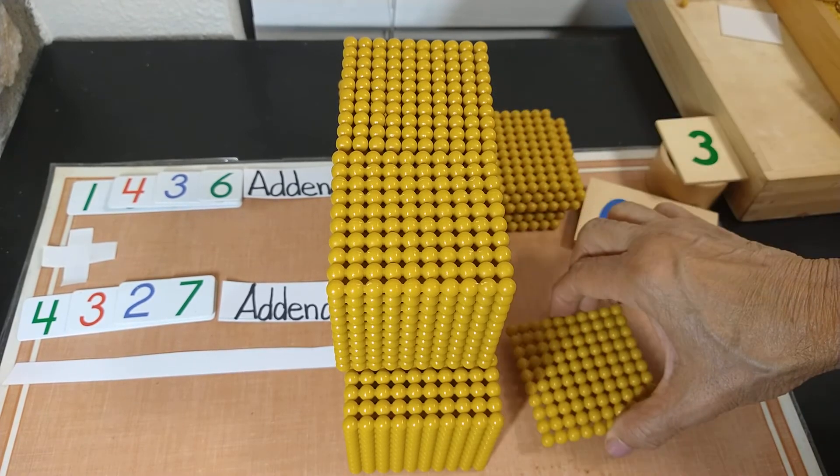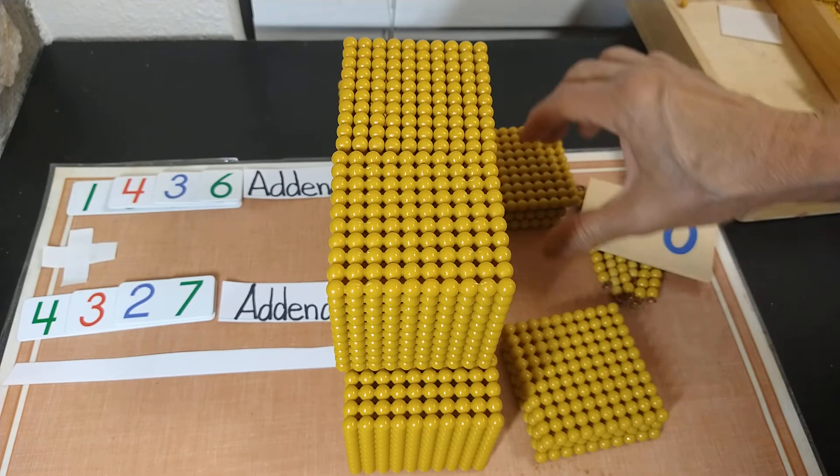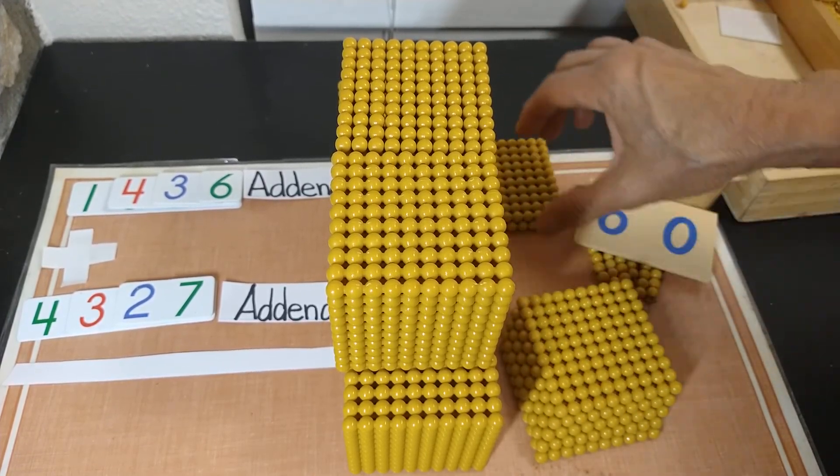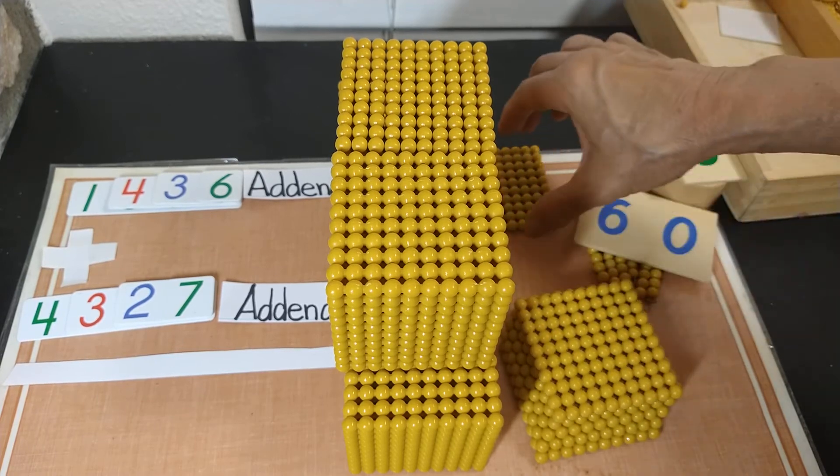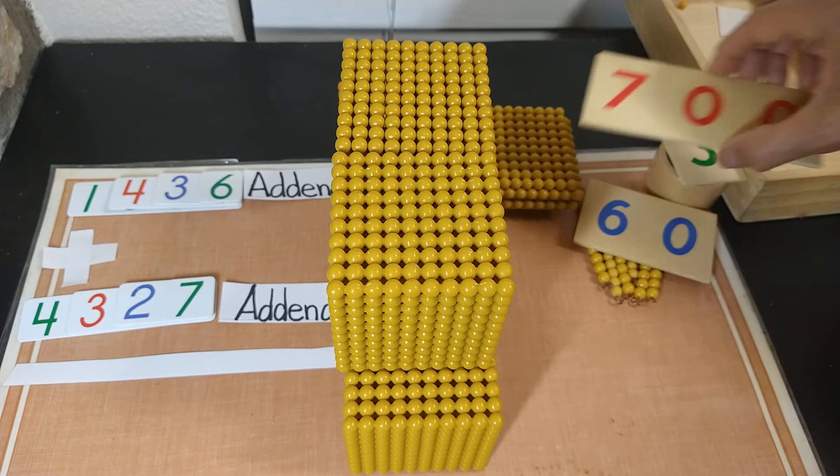Now we need to count hundreds. One hundred, two hundred, three hundred, four hundred, five hundred, six hundred, and seven hundred. So I have seven hundred here.